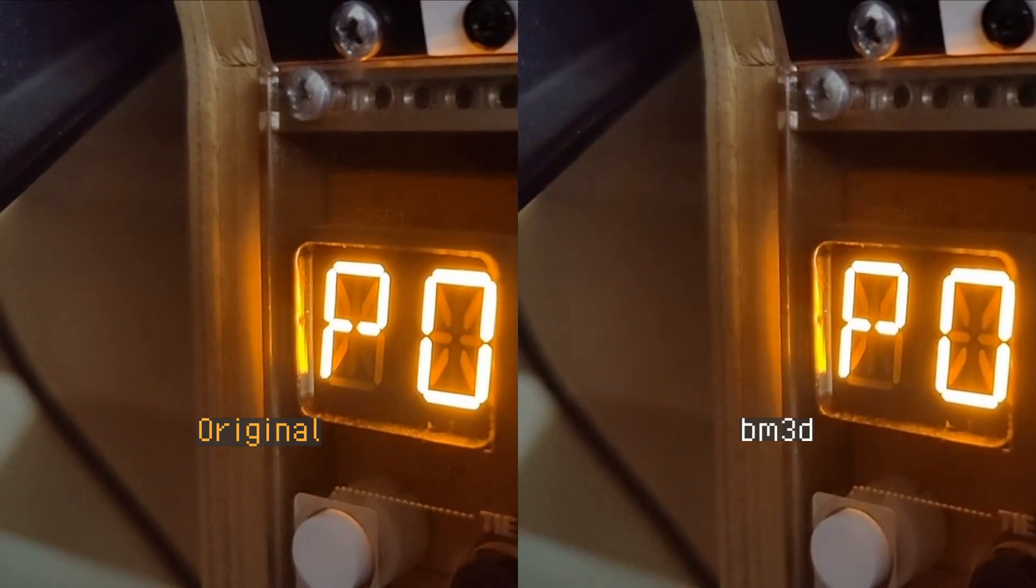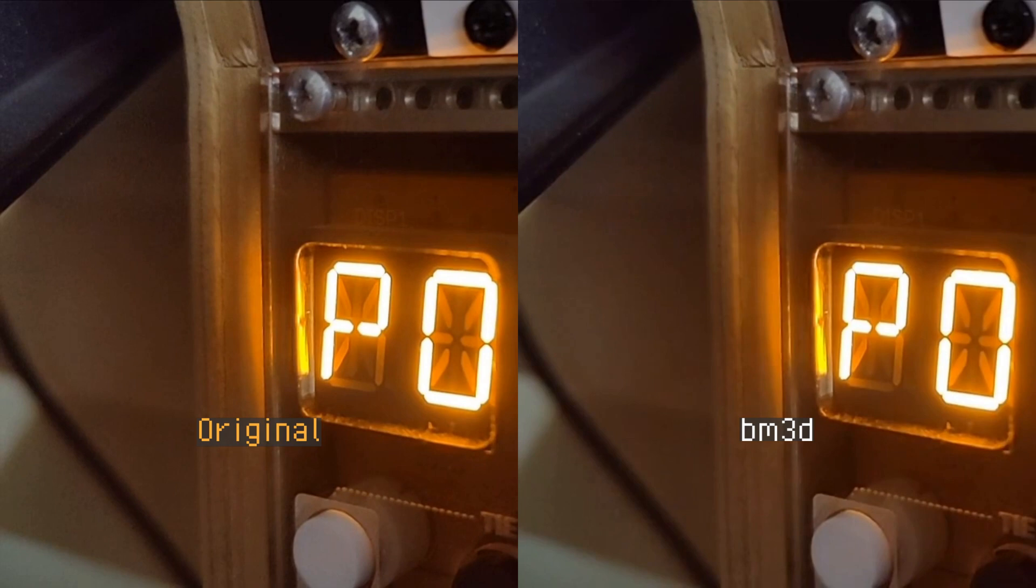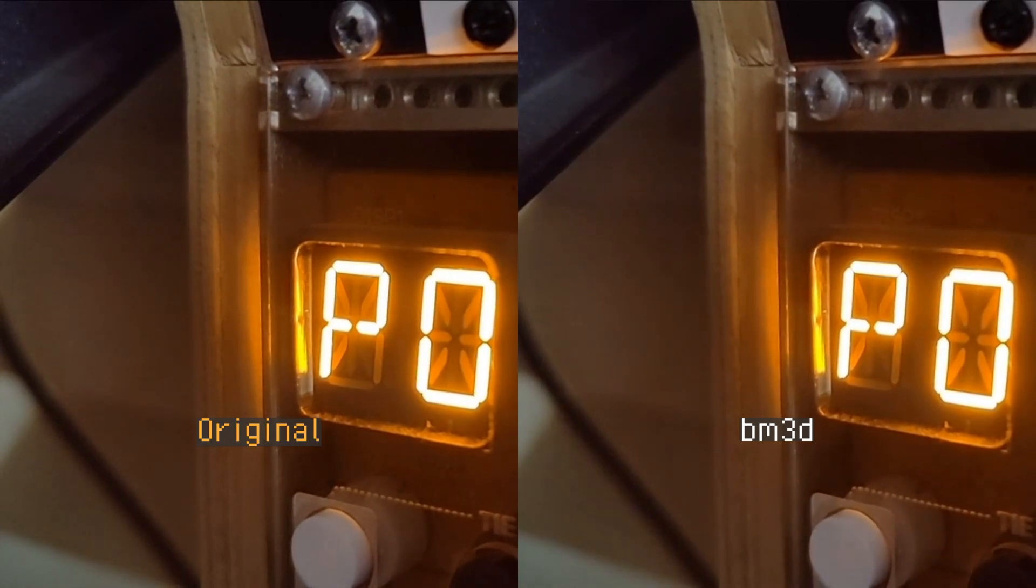BM3D is also quite highly regarded. It doesn't look quite as good as the first two, but it renders about twice as fast as NL Means for me, so about 2 frames per second.